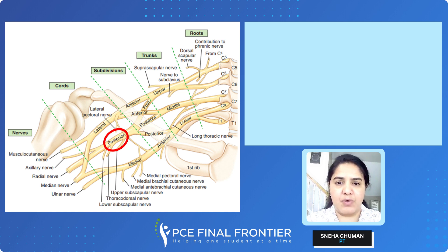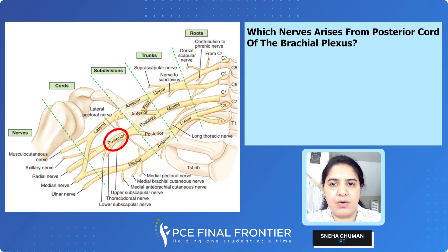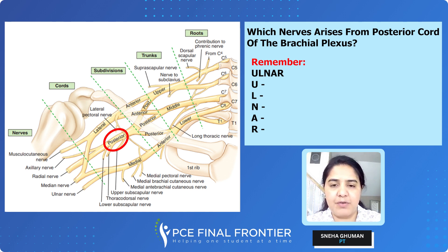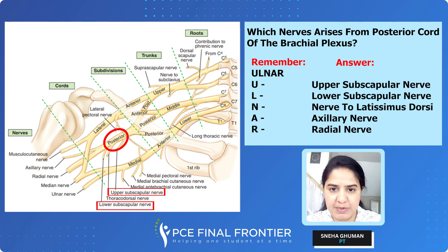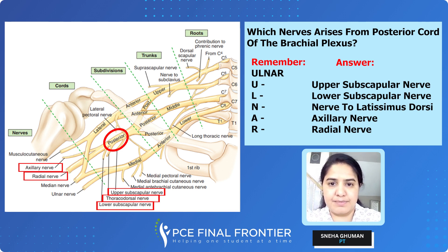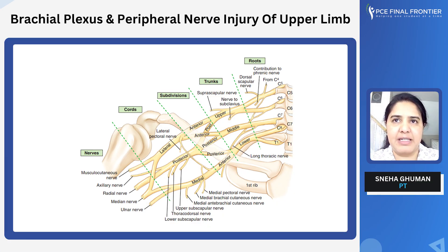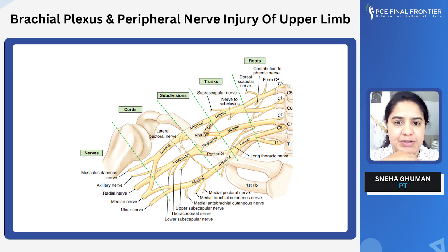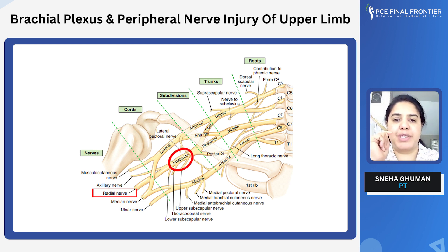Let's proceed to the posterior cord of brachial plexus. The nerves arising from the posterior cord are: upper subscapular nerve, lower subscapular nerve, nerve to latissimus dorsi, axillary nerve, and radial nerve. For example, if a patient has difficulty extending the elbow, the muscle responsible is supplied by the radial nerve, which originates from the posterior cord of brachial plexus.